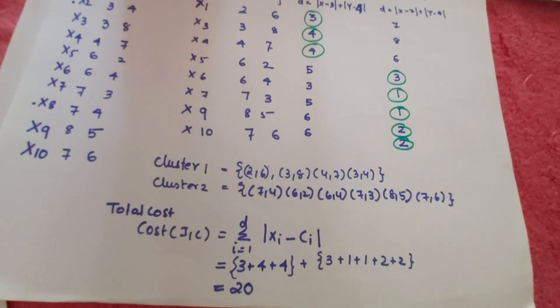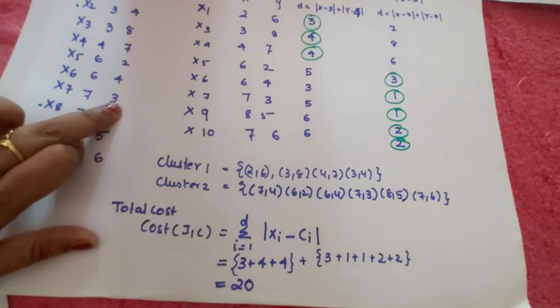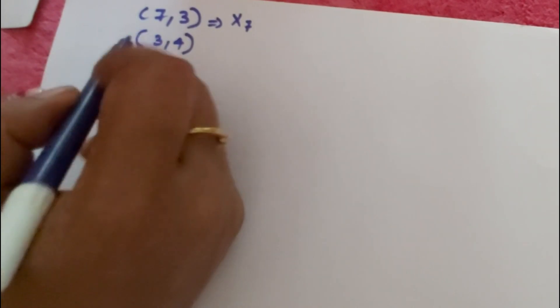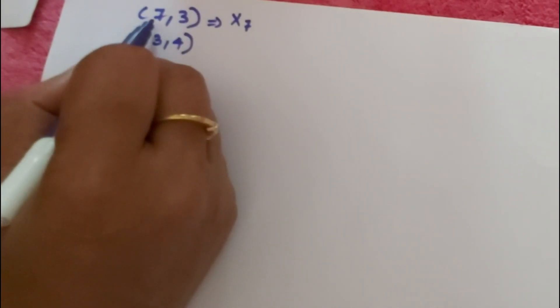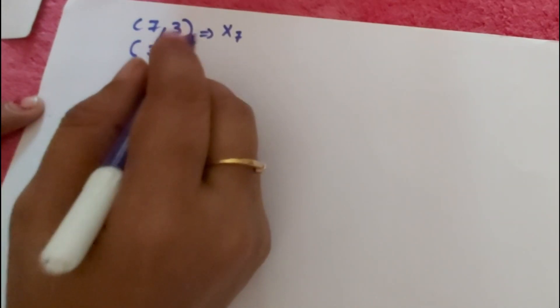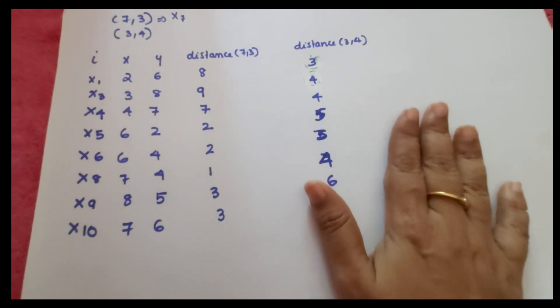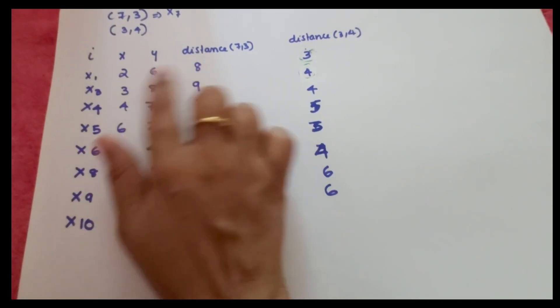According to the algorithm, we now choose one non-medoid object, say X7 = (7,3), and consider swapping it with the second medoid. The old medoid was (3,4). We calculate the Manhattan distances of all points to the new candidate medoid (7,3) and to (3,4). The distances to (7,3) are: 8, 9, 7, 2, 2, 1, 3, 3. The distances to (3,4) are: 3, 4, 4, 5, 3, 4, 6, 6.